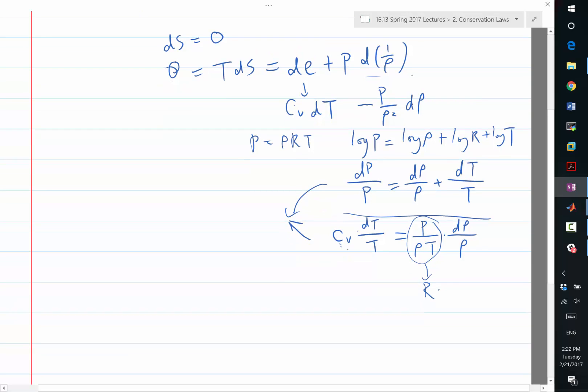For example, this equation says that dT over T has to be gamma minus 1 times d rho over rho. And then you add this and this, it tells you dp over p has to equal gamma times d rho over rho.